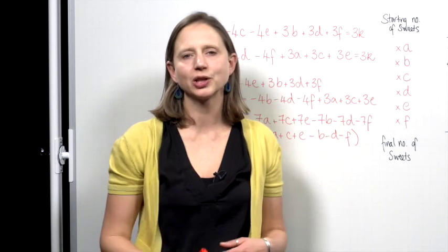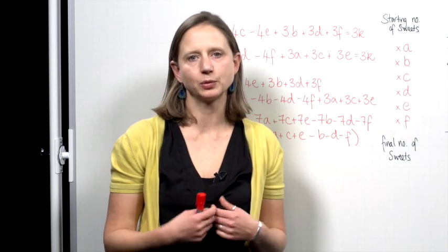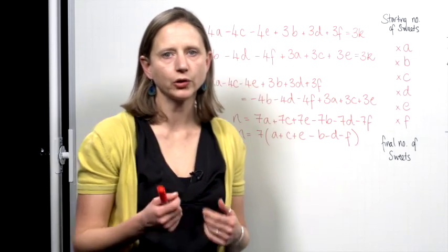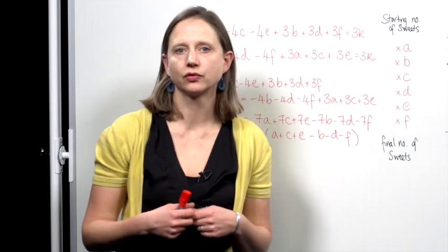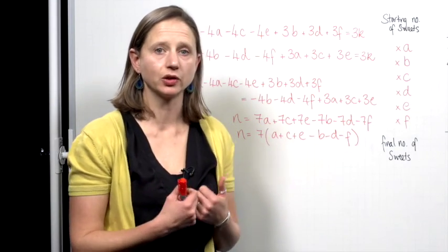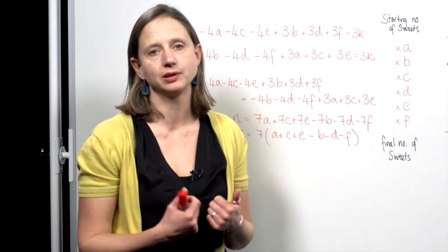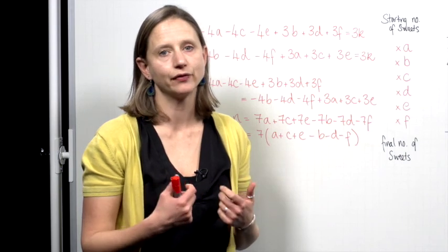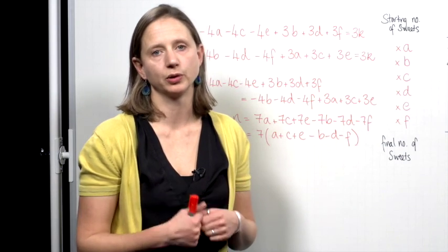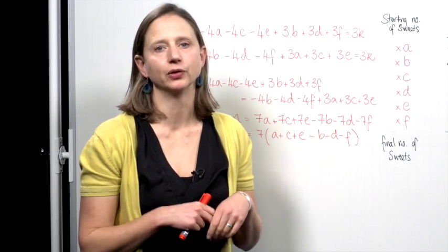So putting this all together, we've seen that multiples of 28 work. We also have that the number of sweets required for a perfect arrangement must be divisible by 4, and must be divisible by 7. And therefore, the answer is all of the multiples of 28, and only the multiples of 28.